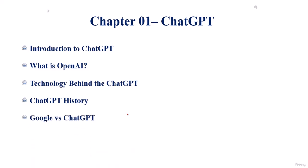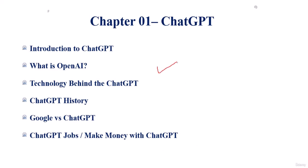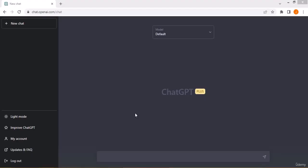Topics covered in chapter one include: introduction to ChatGPT, what is OpenAI as the founder of ChatGPT, the technology behind ChatGPT, ChatGPT history, Google versus ChatGPT comparison, and ChatGPT jobs or how to make money with ChatGPT. Don't miss any lecture from chapter number one. If you have any confusion or question you can discuss with me without any hesitation.